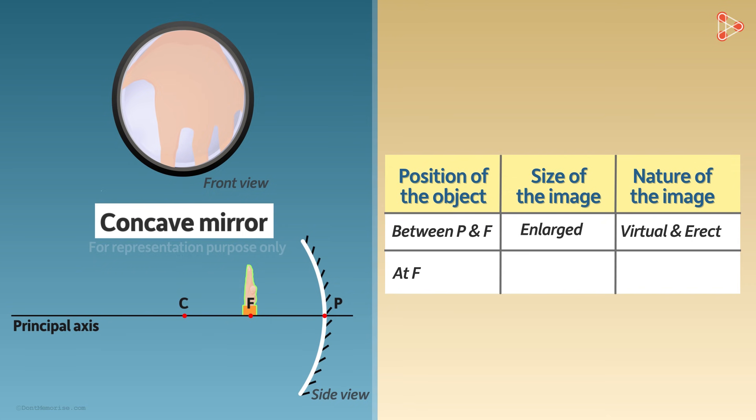We say that when the object is at the principal focus, the image is highly enlarged. Is it a real or a virtual image? It is a real image. Since it's a real image, it's upside down, or we use the other word for it, which is inverted. It is formed on the same side of the mirror as the object is. And believe it or not, the image is actually formed infinitely far away.